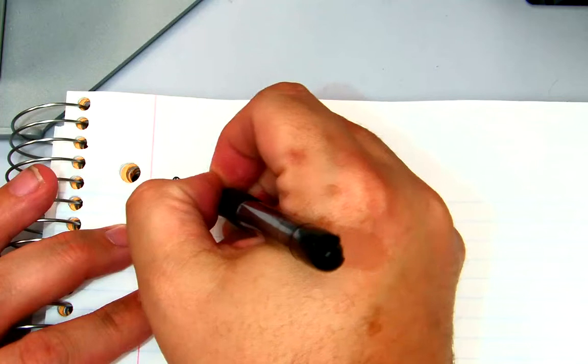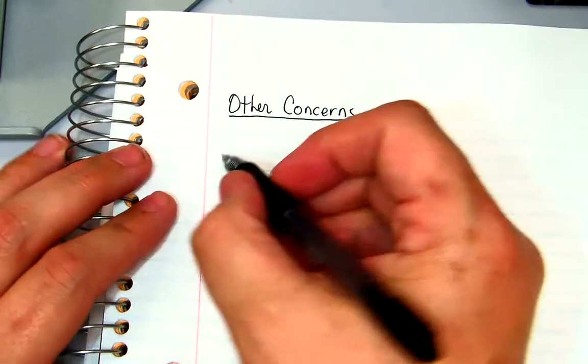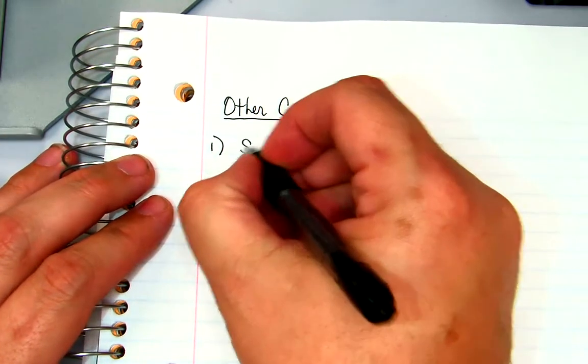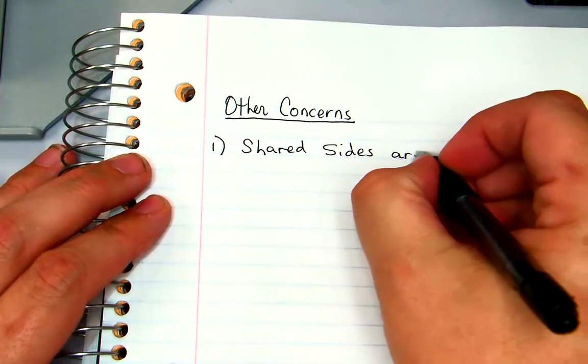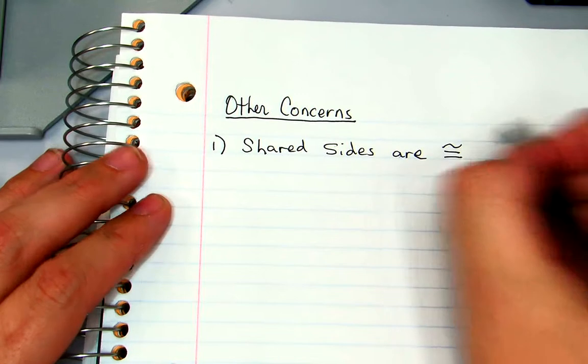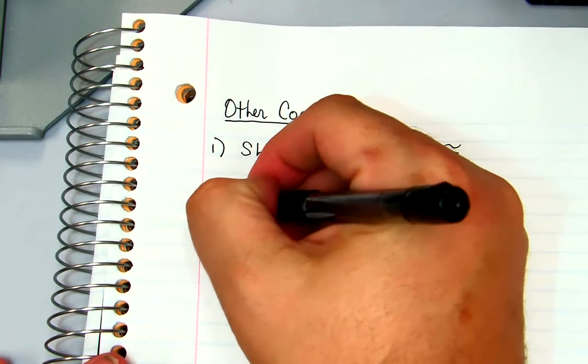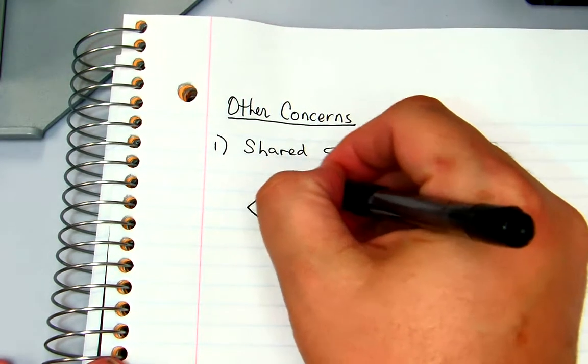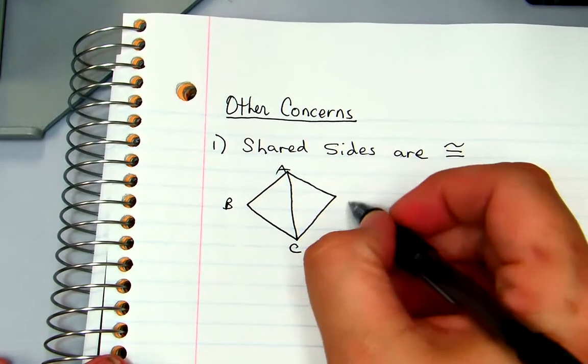So on the next page, we'll call it other concerns. The first concern would be that shared sides are congruent. And here's what I mean. You've got a triangle here and a triangle here. If that's A, B, C, and D, AC is a shared side.